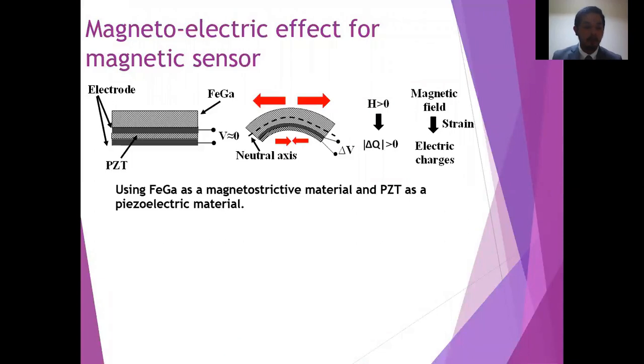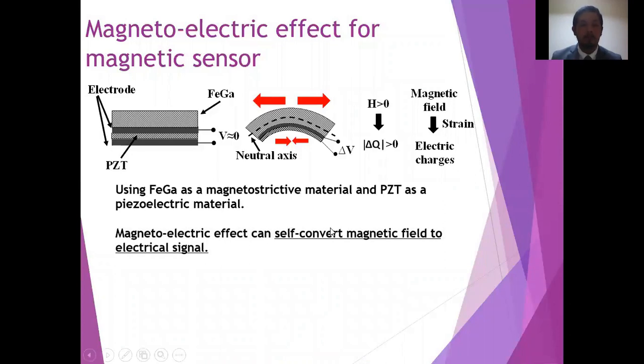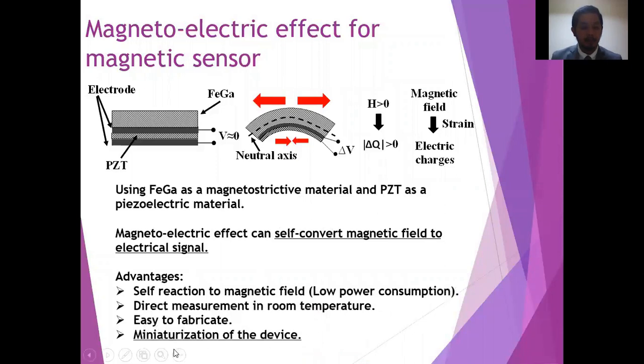The magneto-electric based magnetic sensor emerged as one of the candidate to accomplish the needs of future magnetic field sensor. It is based on the capability of the magnetostrictive material to convert magnetic field to strain, then coupled with the piezoelectric material to produce electrical charge. It has several advantages that meet the future needs of magnetic sensor such as low power consumption by the self-conversion magnetic field to electrical signal, direct measurement in room temperature, easy to fabricate, and possibility for miniaturization of the device.